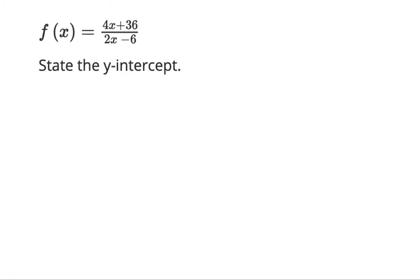Here's a rational function f(x) equals 4x plus 36 over 2x minus 6, and it says state the y-intercept. We can begin by letting x equal 0. If you're wondering why that's the case, any y-intercept has to go through the y-axis, meaning the x-coordinate is 0. So it has to be 0 and some number.